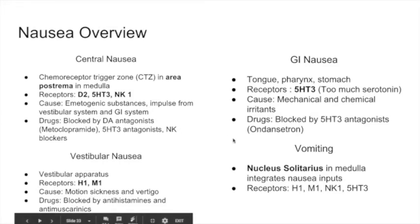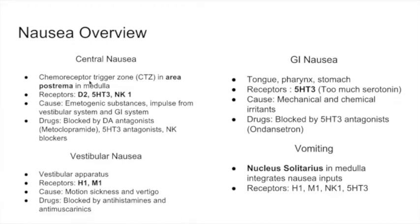All of these combine to produce vomiting. Central nausea happens from the chemoreceptor trigger zone in the area postrema in the medulla. There is a little area in the posterior medulla called the chemoreceptor trigger zone. Any emetogenic substance — any substance that causes emesis, nausea, or vomiting — will irritate this zone.